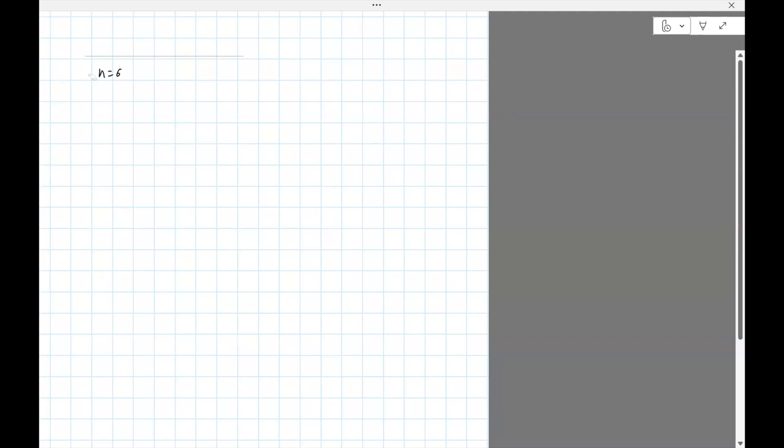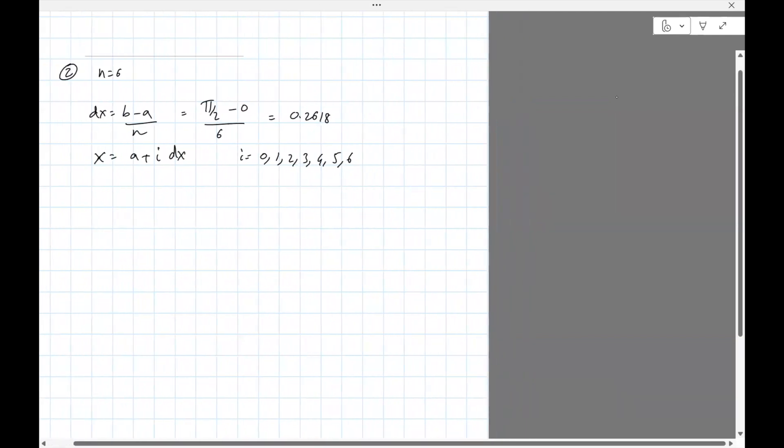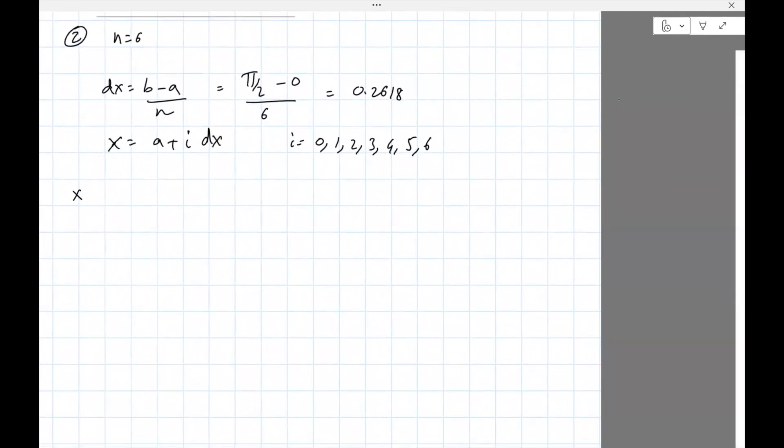Here n is equal to 6. So again, we compute dx, that's b minus a divided by n. So b is pi divided by 2, n is 6. This comes out to be 0.2618. So now I need to get the grid, which is x equals a plus i times dx, where i will go from 0, 1, 2, 3, 4, 5, 6. I need to stop at n. Okay, so based on that I have x cosine x.